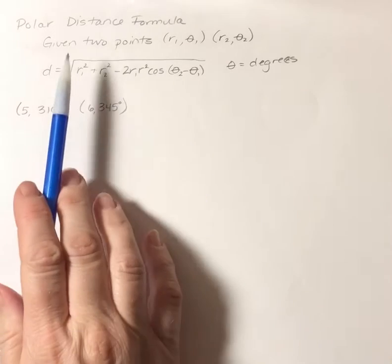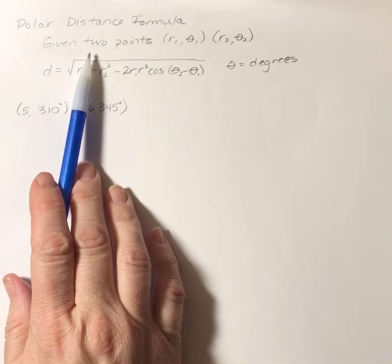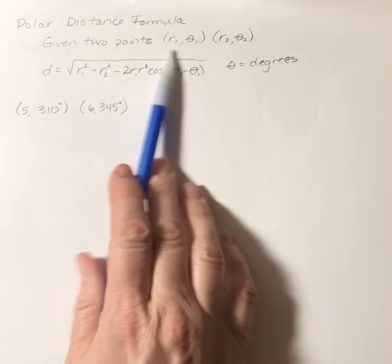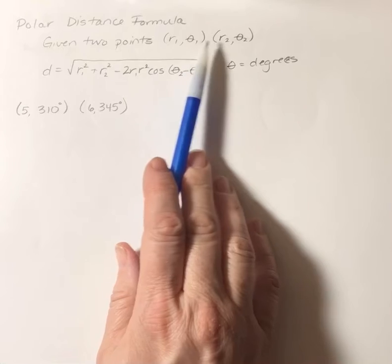Last part of 9.1 is on the distance formula. And if you look at this distance formula, they're going to give you two points, two polar coordinates, r theta and r theta.